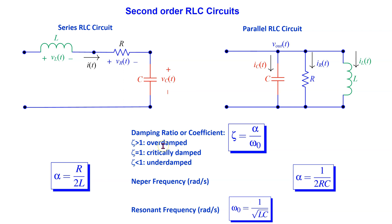The significance of the damping ratio is as follows. If the damping ratio is 1 or greater than 1, then the response does not exhibit oscillation in the transient phase. If the damping ratio is less than 1, then the response exhibits oscillation or ringing. The oscillation rate is determined by the resonant frequency omega 0, and the oscillation amplitude decreases exponentially at a rate determined by alpha.